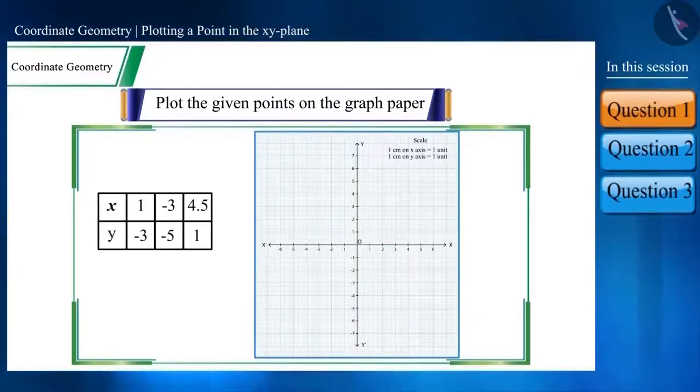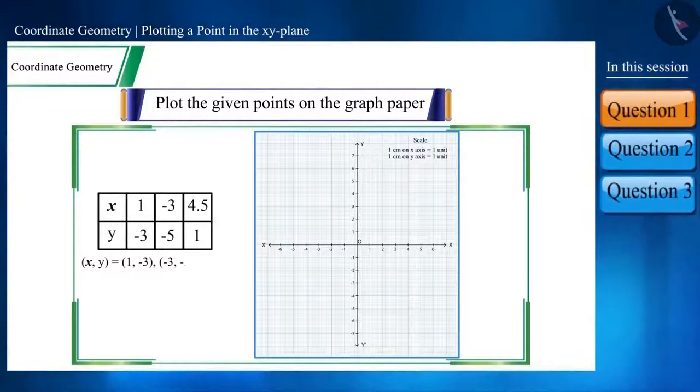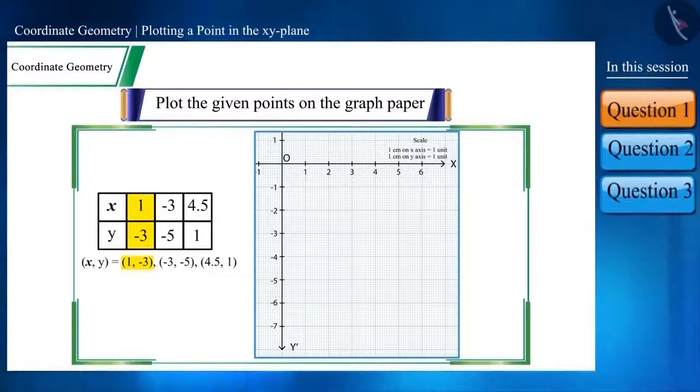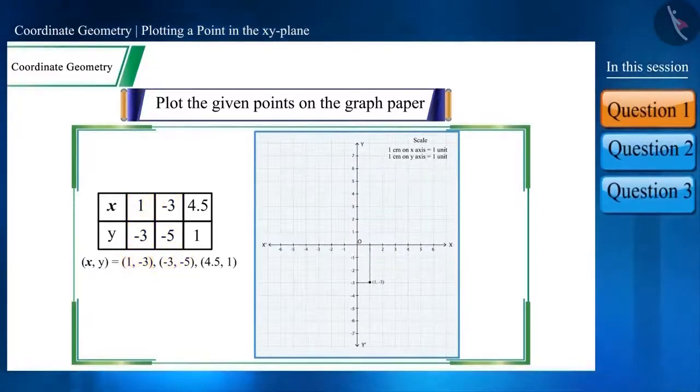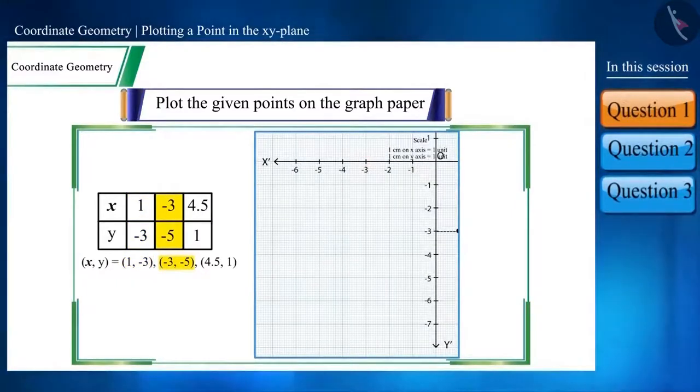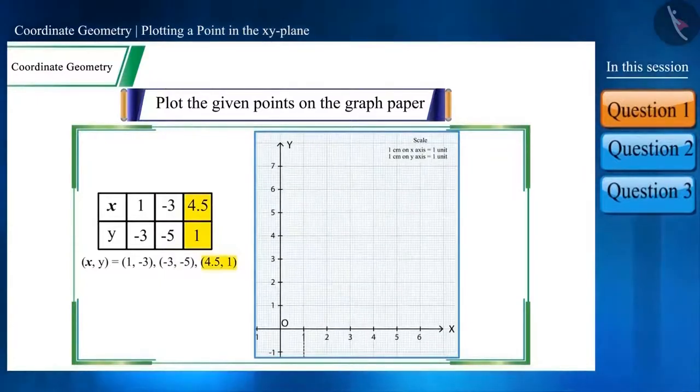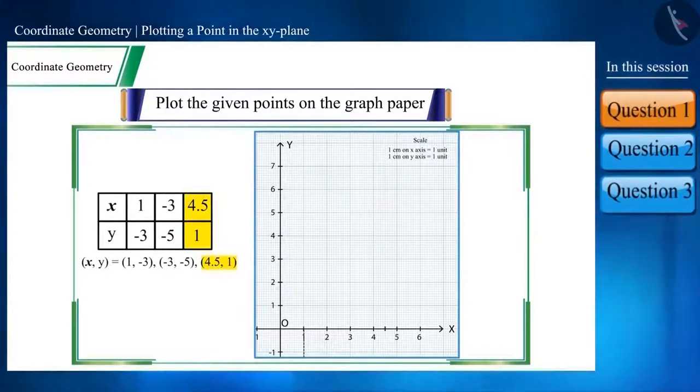You can also write these numbers in the form of coordinate points like this. Friends, we will now plot the first point, 1, minus 3. According to the methods described in the previous video, x coordinate is 1. So from 1, move the line to minus 3 on the y axis and plot the point there. The second point is located at minus 3 on the x axis after moving downwards by minus 5. And likewise, the third point is located in the first quadrant, between 4 and 5, where it is plotted 1 unit above 4.5.